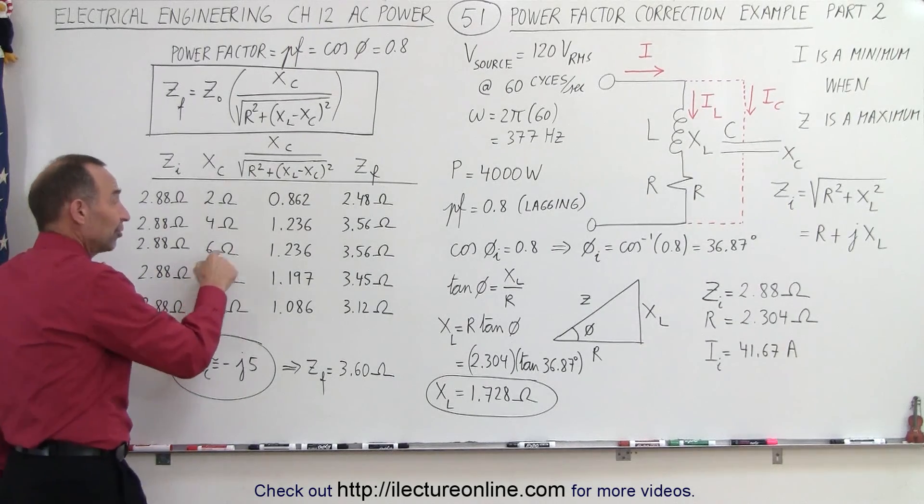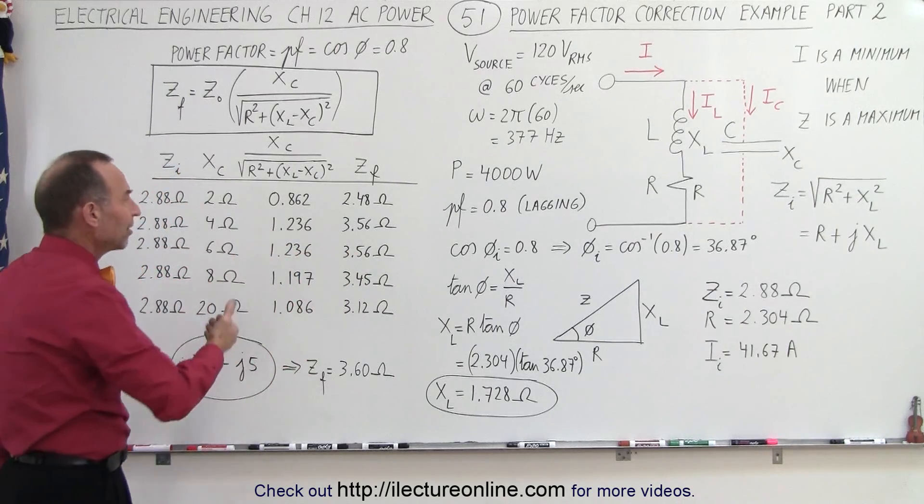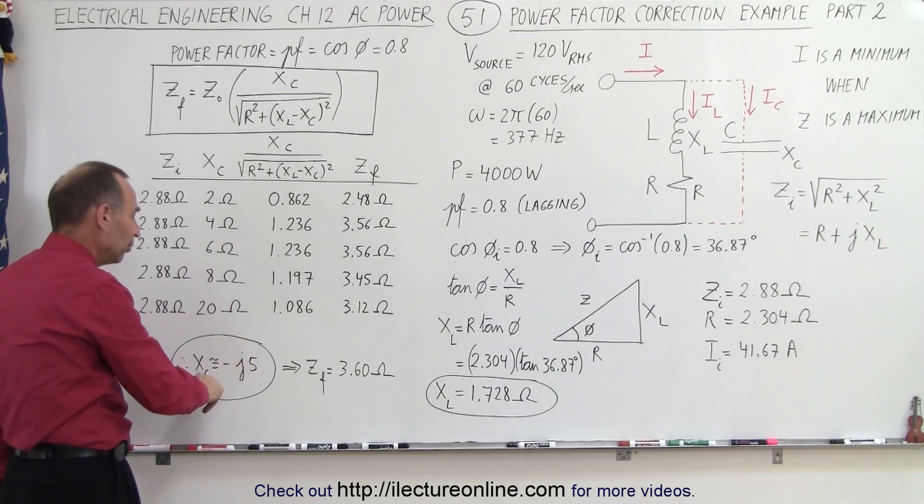When we go to 6 ohms, it turns out we have the exact same value, which probably means that the correct value should be somewhere between 4 and 6 ohms, let's say about 5 ohms.